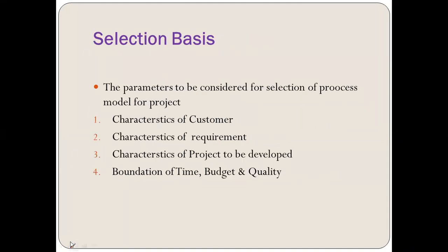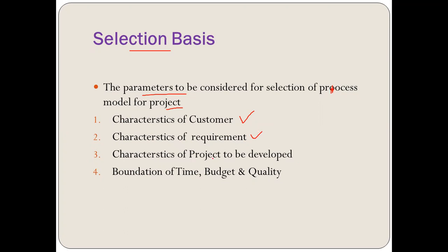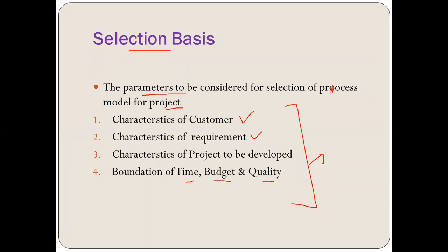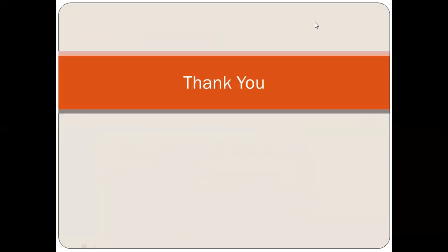Finally, what is the selection basis for a process model? The parameters to consider when selecting a process model for any project are: the characteristics of the customer, the characteristics of the requirements — whether they are stable or frequently changing, the characteristics of the project — whether it is large scale, complex, or small scale, and lastly the constraints of time, budget, and quality. According to these four parameters, we decide which process model to select for a given project.